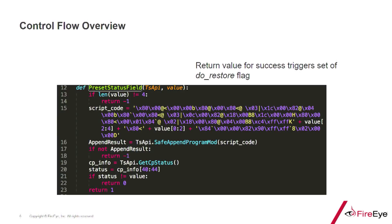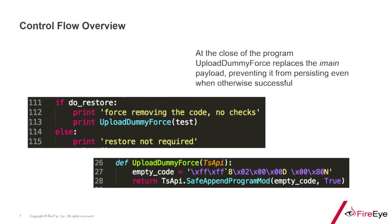The important takeaway is that in the case of success — reading the same value out of memory that was just written — rather than using an exception as a Python programmer might, they used a C-style integer return value to indicate success or failure. When this gets passed back to the script, it checks the status and sets a flag to perform a restoration function. At the very end of the code, it checks that flag and if it has been set, overwrites its payload with a small dummy program.